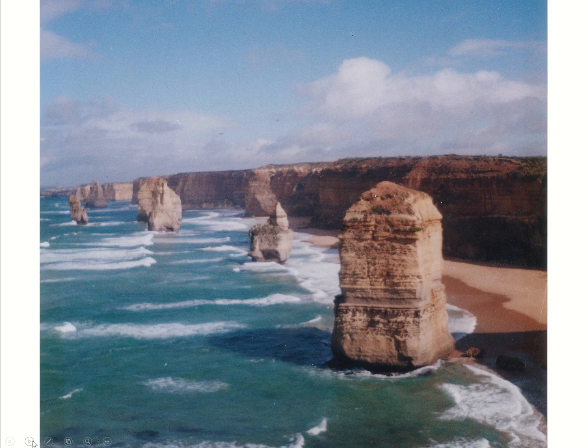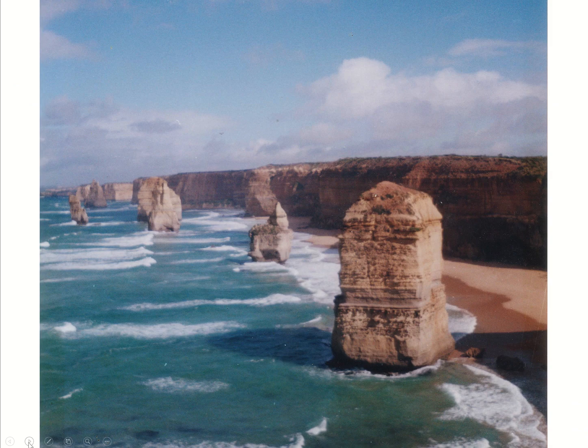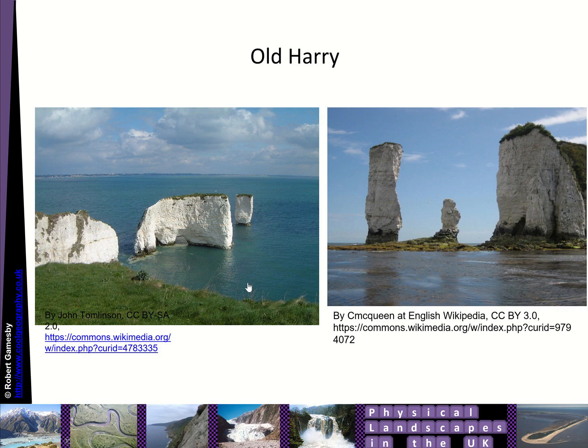These features here are stacks, those are arches that have been collapsed and abandoned. So all of these would have been connected to this cliff line here. It's from the Great Ocean Road in Australia, the 12 Apostles, and this example here is Old Harry, Old Harry Rocks, on the south coast of the United Kingdom.